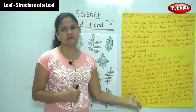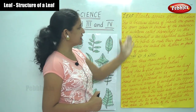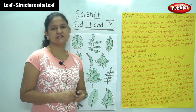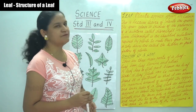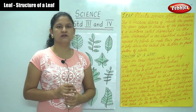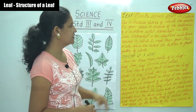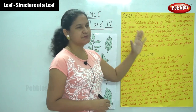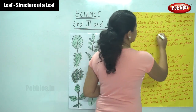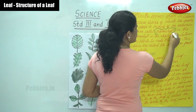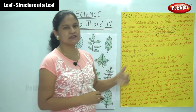Next we are going to see about the leaf. Plants appear green in color. When you look at a plant you see that it is green in color. This is because the leaves of the plant are green. The green color is because of the presence of a substance called chlorophyll in the leaves.